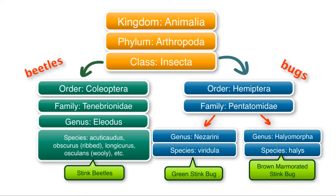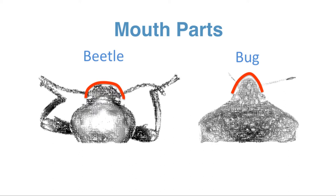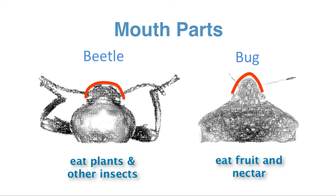Let's take a look at the mouth parts and their diet. When looking at bugs, the mouth parts are modified into a piercing needle to eat fruit and suck up nectar, so they tend to have very pointy heads. Whereas beetles have chewing mouth parts to eat plants and other insects, and they tend to have a rather flattened mouthpiece with mandibles so that they can grab and chew plants.